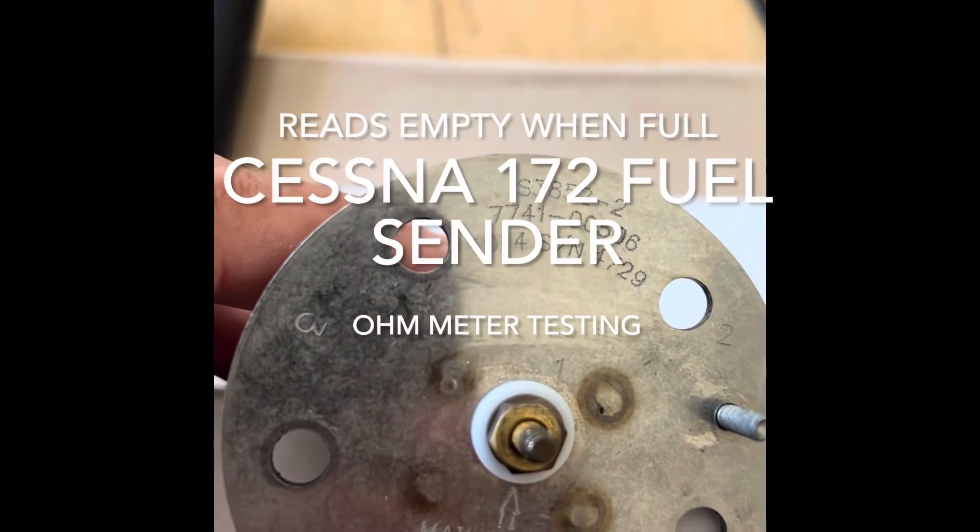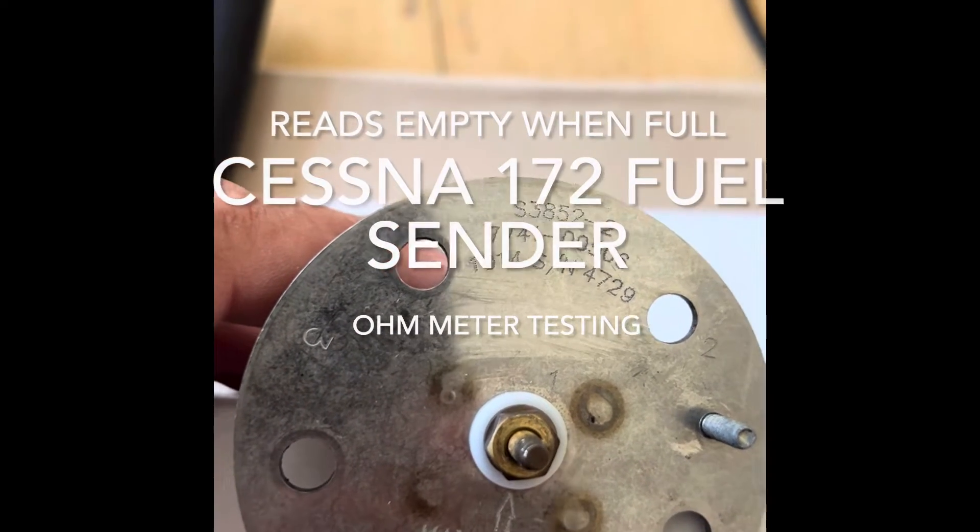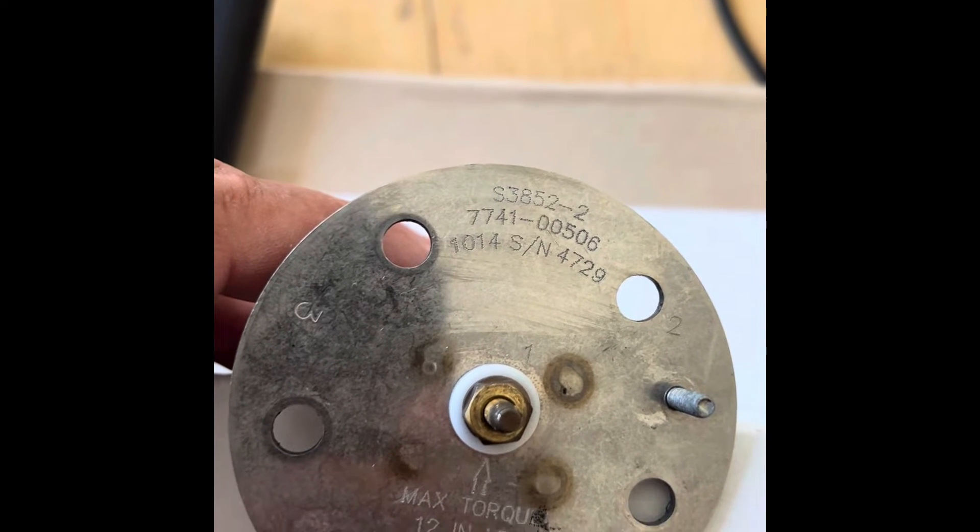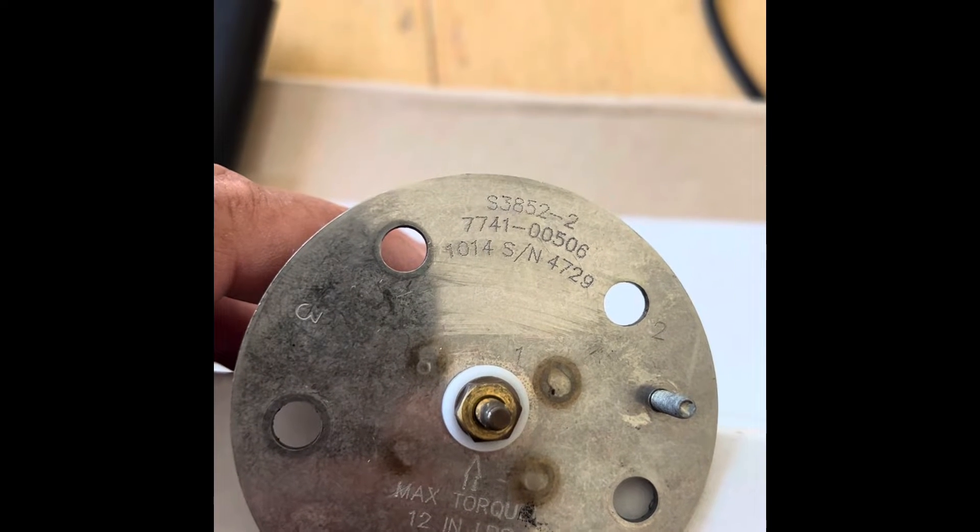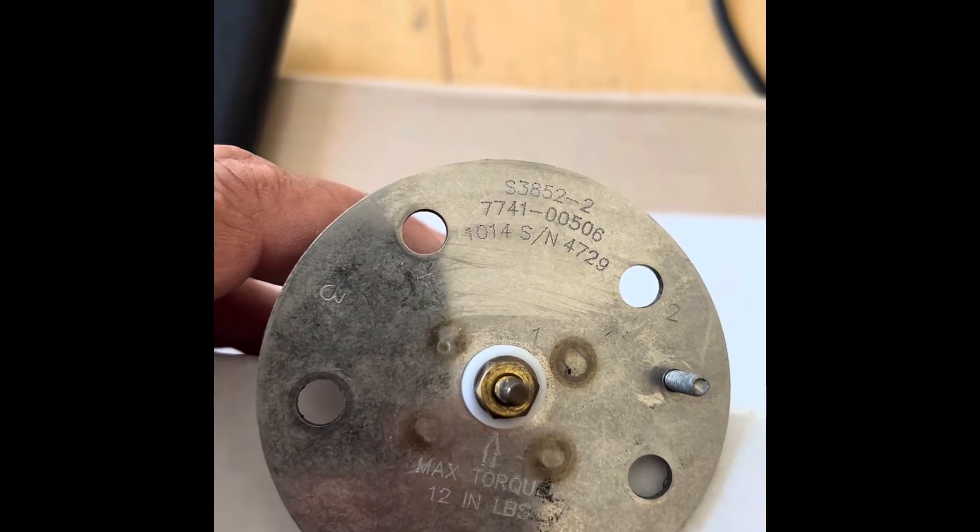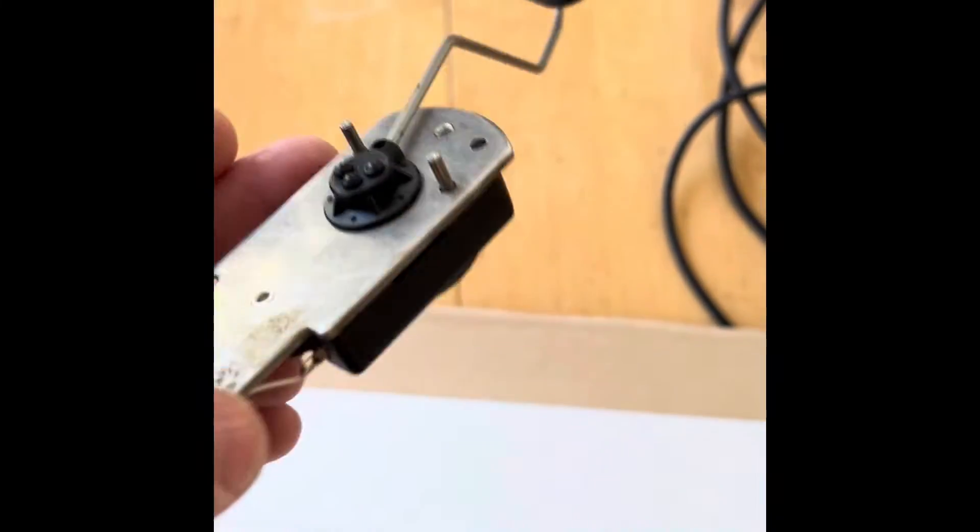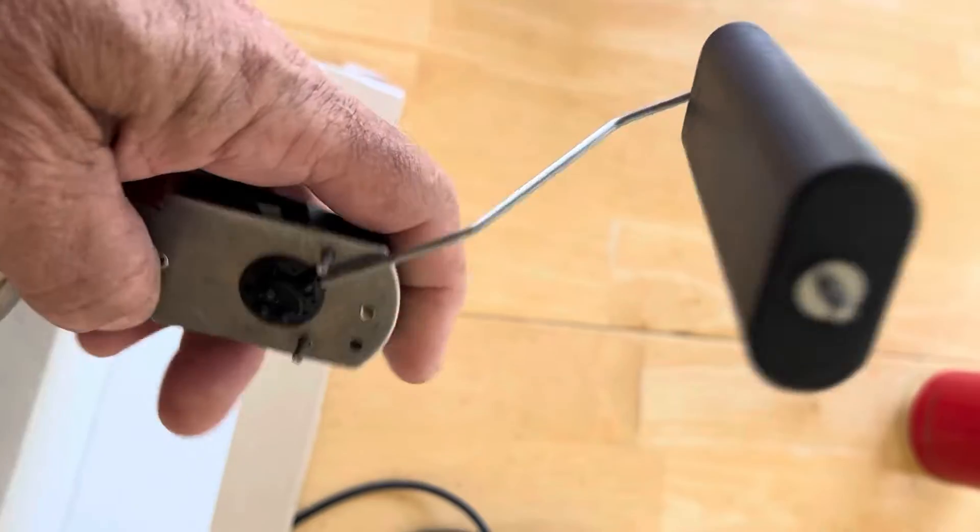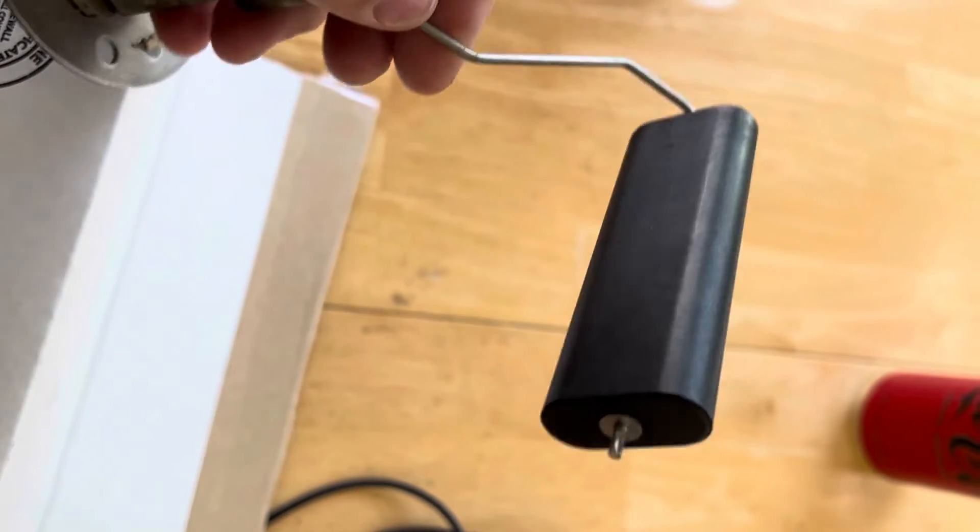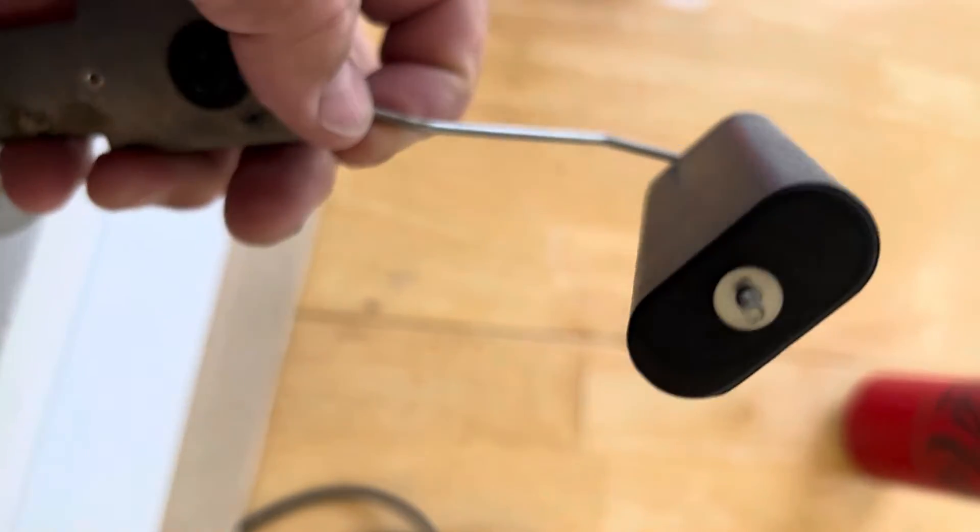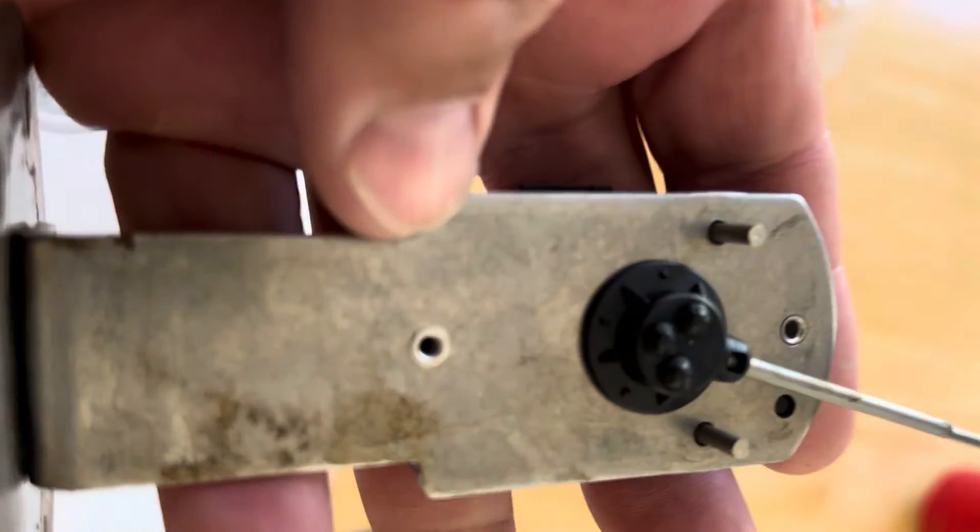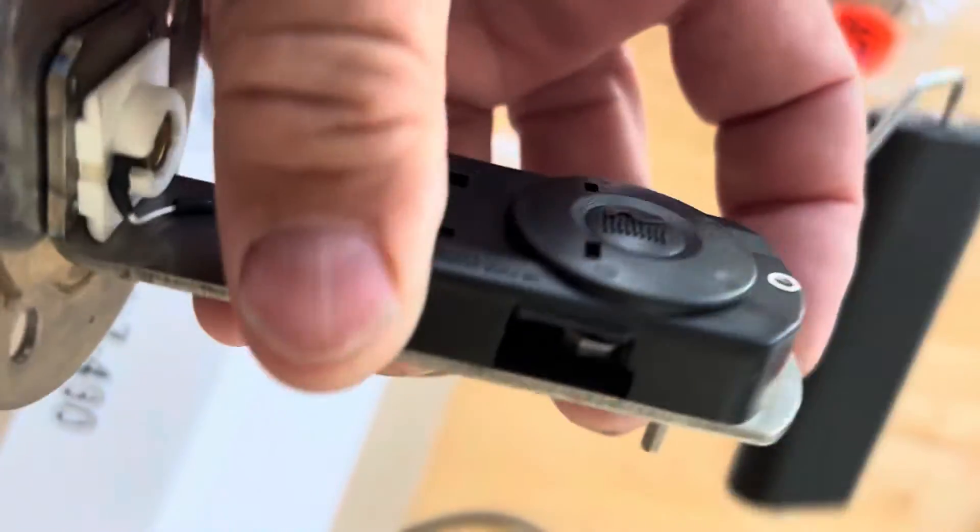So this is a fuel sender for a 2004 Cessna 172 Sierra Papa. And this, I'm told, is the second fuel sender that failed. The indication is that when the fuel is full, sometimes the right fuel gauge shows empty. This is a float arrangement, a pretty simple part. I'm going to see if I've got another part number here to show you.